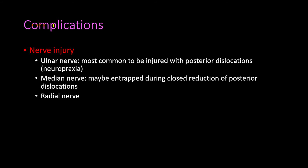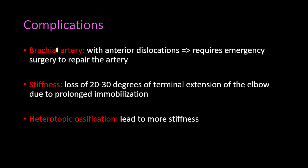Regarding complications of elbow dislocations, early complications include nerve injury and vascular injury. For nerve injury, the ulnar nerve is most commonly injured — especially with posterior dislocations — typically resulting in neurapraxia that heals on its own within eight weeks. The median nerve can also be injured and may be entrapped during closed reduction of posterior dislocations. The radial nerve may also be injured.